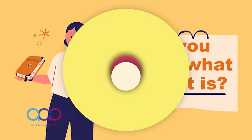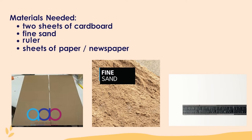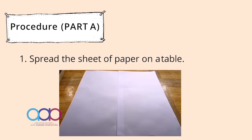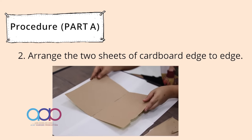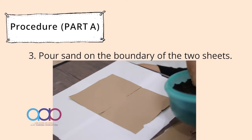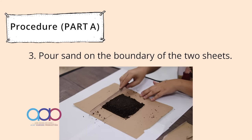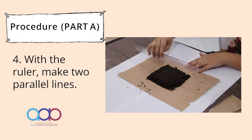Do you know what a fault is? Let us perform this activity: a faulty setup. In this activity, we will be needing two sheets of cardboard, fine sand, a ruler, and sheets of paper or newspaper. The first thing to do is spread the sheet on the table. Then arrange the two sheets of cardboard edge to edge. Pour sand on the boundary of the two sheets. With the ruler, make two parallel lines.